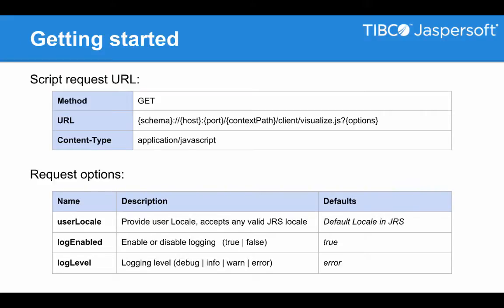Let's look a little bit deeper into what that call involves. Of course, it's a GET method. The content type is pure JavaScript — application/javascript — and the idea is that through the initial request, I can pass certain parameters that allow me to manage the behavior of the visualizations that I generate in Jasper.